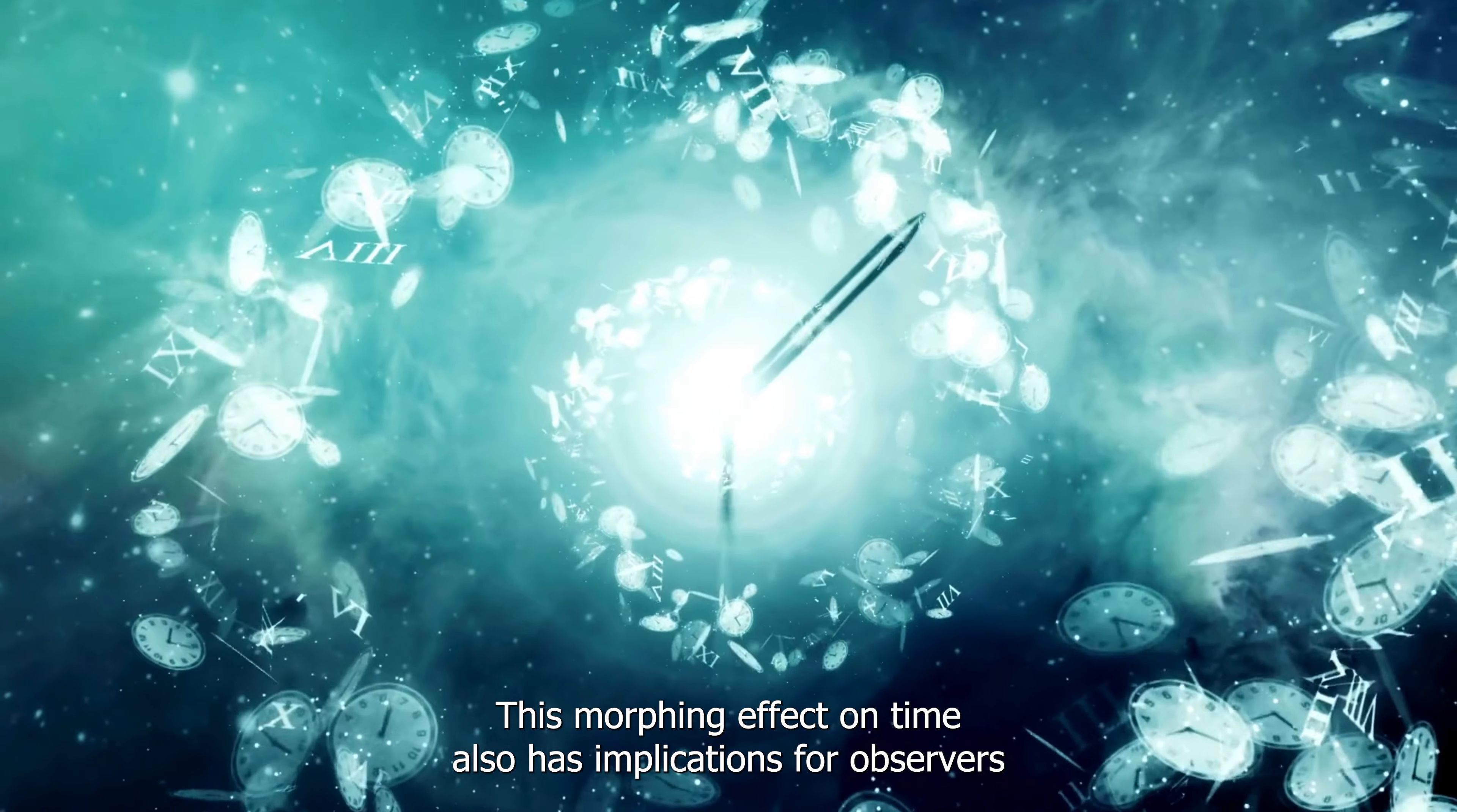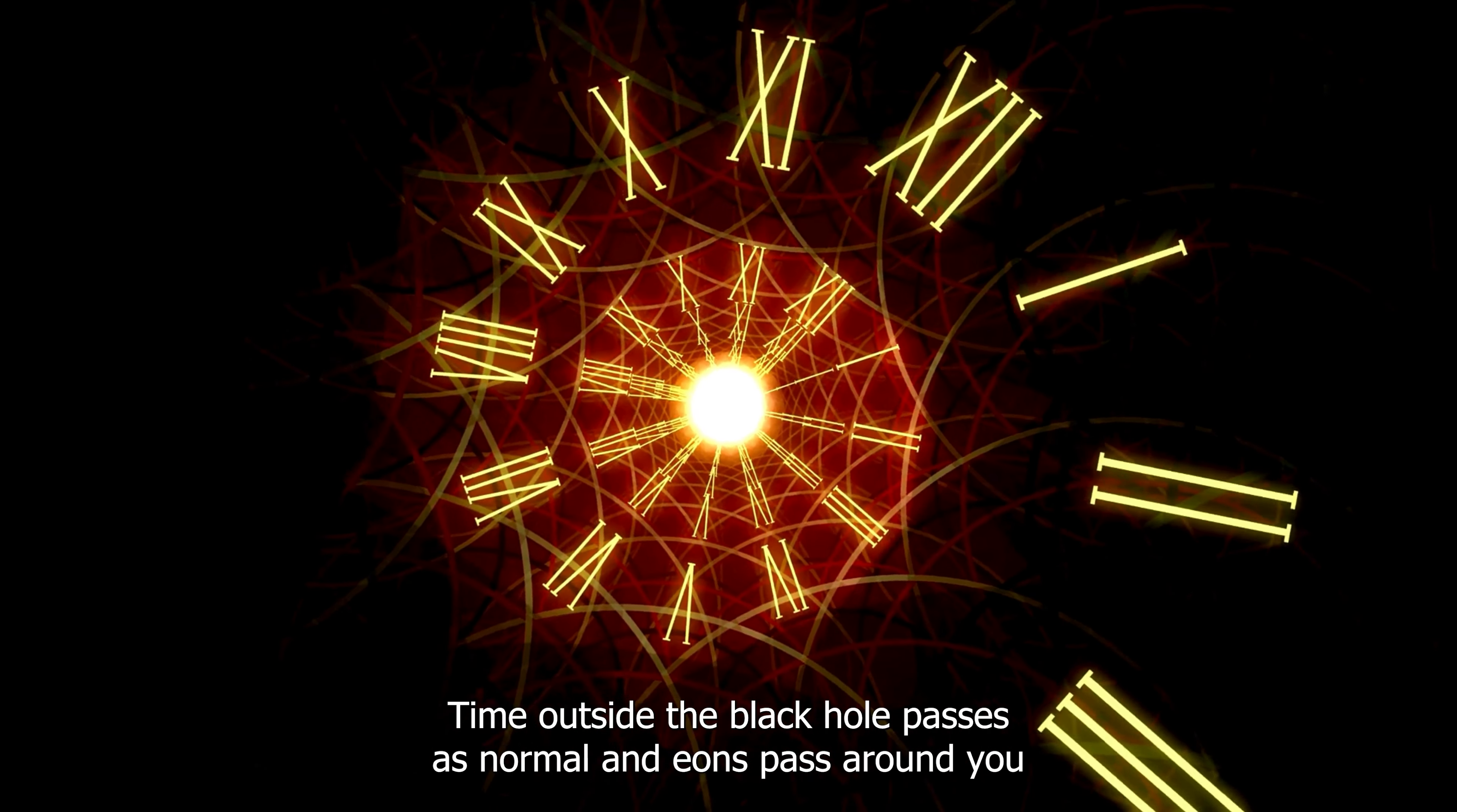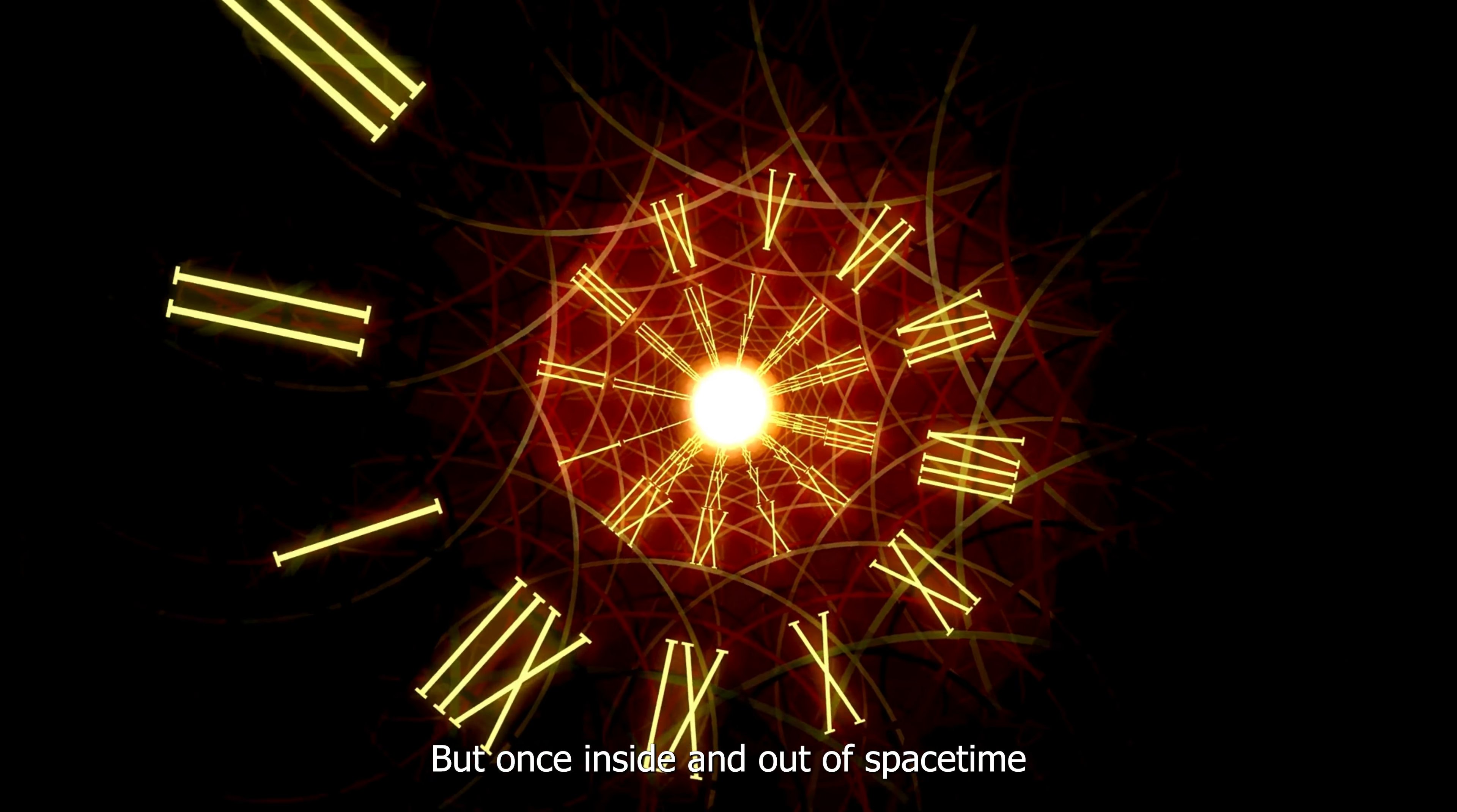This morphing effect on time also has implications for observers outside of the black hole because time becomes increasingly dilated and eventually pauses for you. Their time outside the black hole passes as normal, and eons pass around you as you approach the singularity, but once inside and out of space-time.